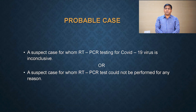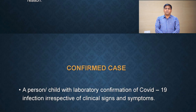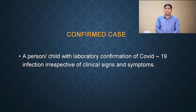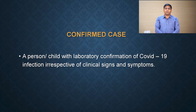If a suspect case has an inconclusive RT-PCR or COVID antigen test result, then this becomes a probable case. Or if the RT-PCR could not be done in a suspect case, that also becomes a probable case. When you perform COVID-19 RT-PCR on a person or child and the test is positive — regardless of presence or absence of clinical symptoms — then it is called a confirmed COVID-19 case.